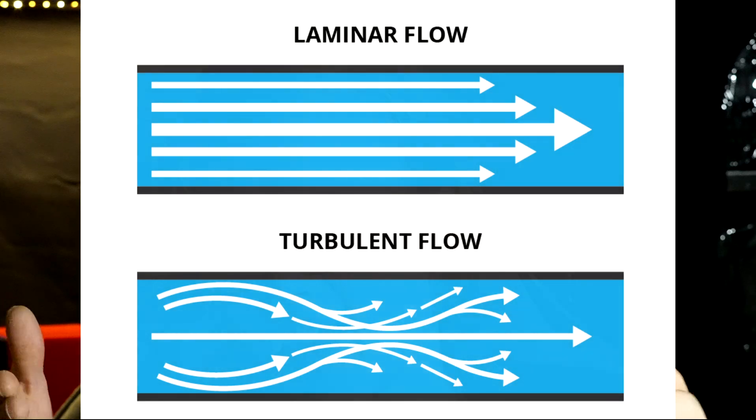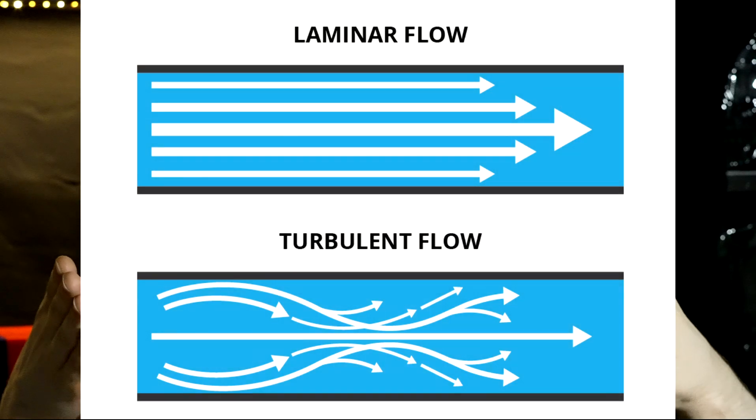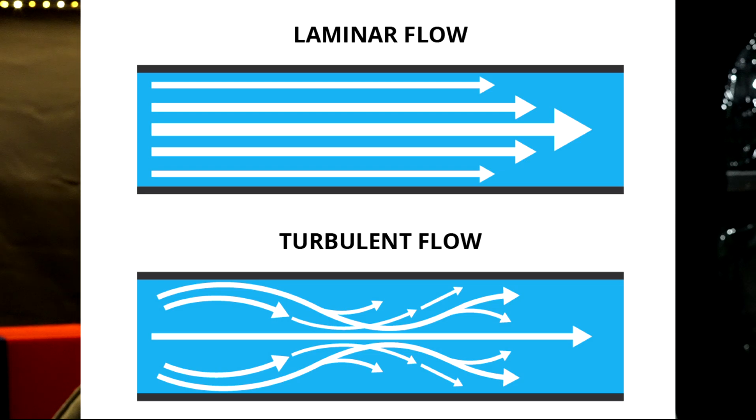In laminar flow, air particles flow in unison — they flow parallel to each other. That means the airflow is a lot smoother and a lot more consistent. In a wind tunnel, the laminar flow enables a more accurate test. The fact that the hairdryer purely emits turbulent flow is another thing that falsifies the test, as it's unrealistic in terms of how real wind actually behaves.